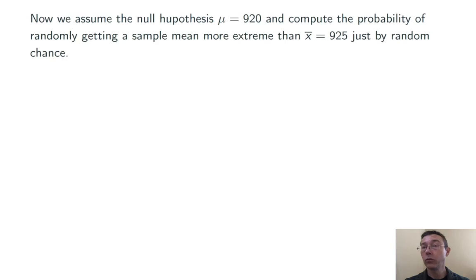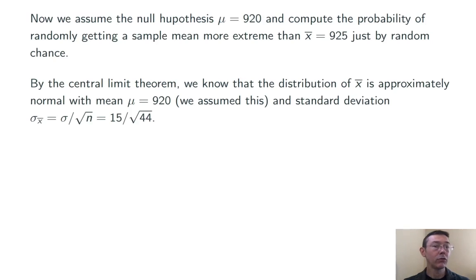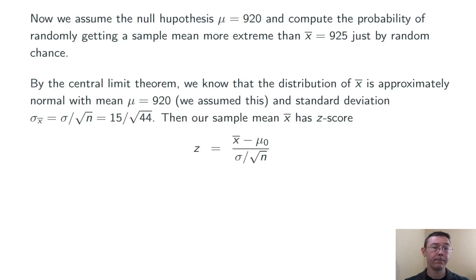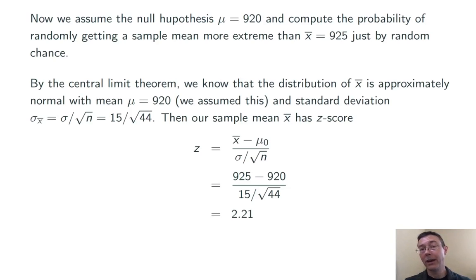We assume the null hypothesis is true — that mu is 920 milligrams — and compute the probability of randomly getting a sample mean more extreme than the one we got. X-bar equals 925. By the central limit theorem, the sampling distribution of X-bar is normal — exactly normal here since we're sampling from a normal distribution — with mean mu equals 920 milligrams (assumed by the null hypothesis) and standard deviation sigma divided by the square root of n, which is 15 divided by the square root of 44. Our sample mean X-bar has a z-score given by x-bar minus mu-naught over sigma divided by square root of n. Plugging in values, we get z equals 2.21, meaning our sample mean is 2.21 standard deviations above what we'd expect under the null hypothesis.